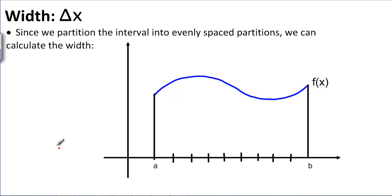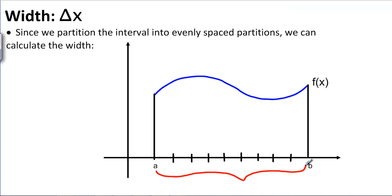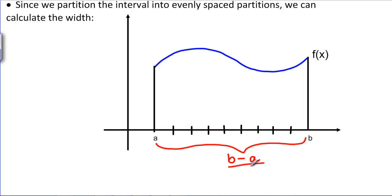The first thing we're going to talk about is the width, which is easier to find. If we are looking at a region from A to B and we want to divide it into N equal pieces, the distance from A to B is B minus A, and we divide by N. The width, which we're going to call delta X, is B minus A divided by N. Delta X stands for change in X — it's how much X changes from one rectangle to the next.